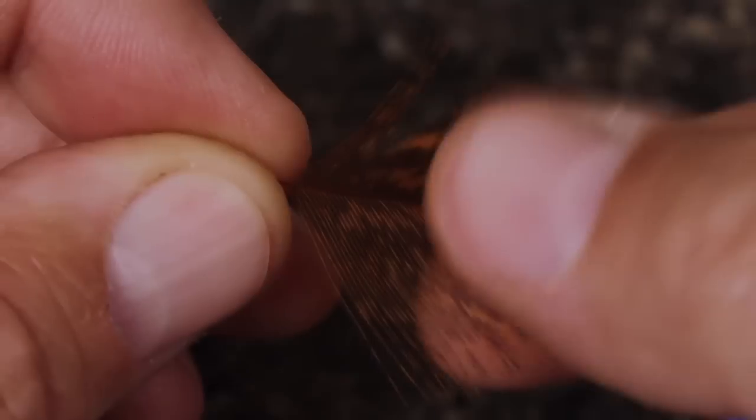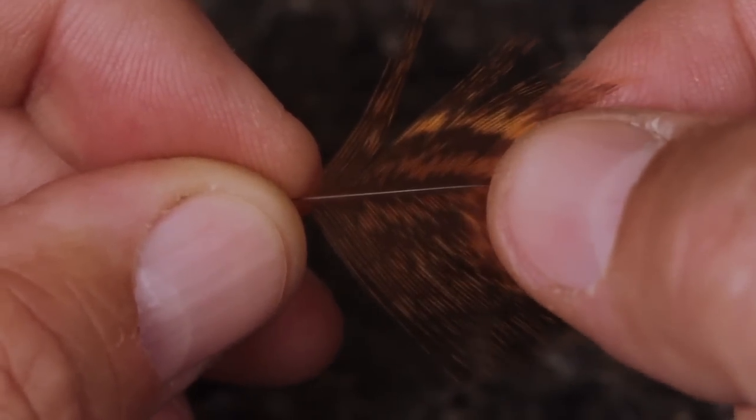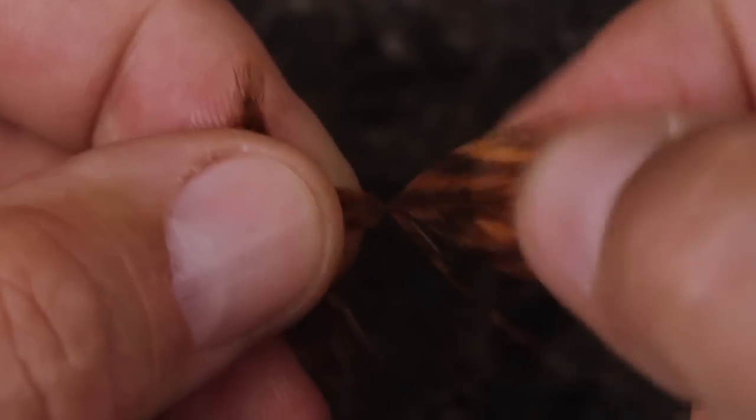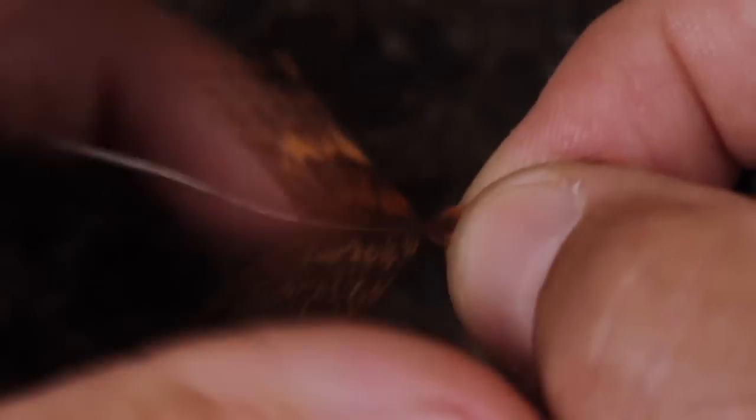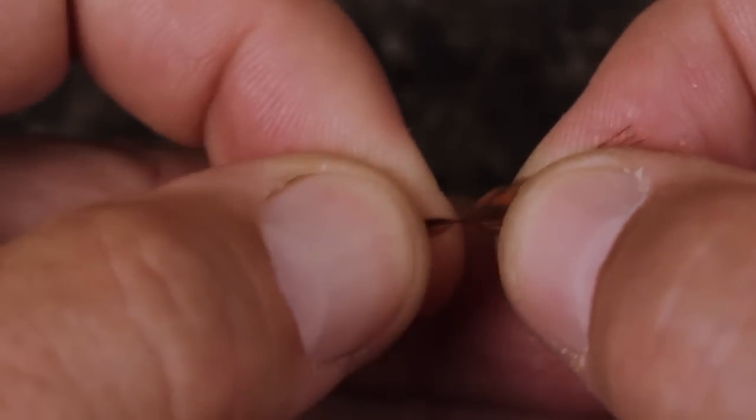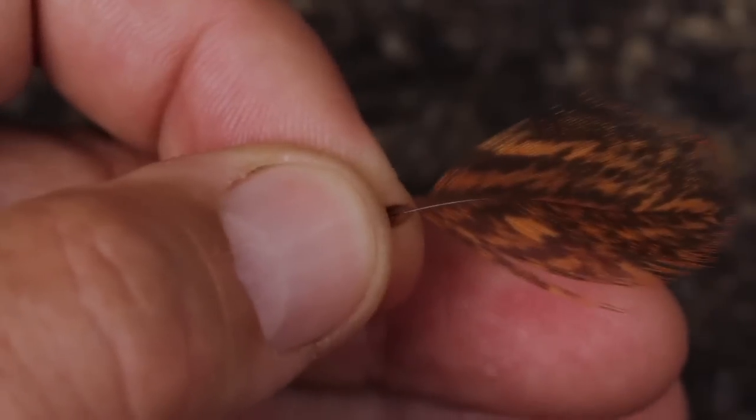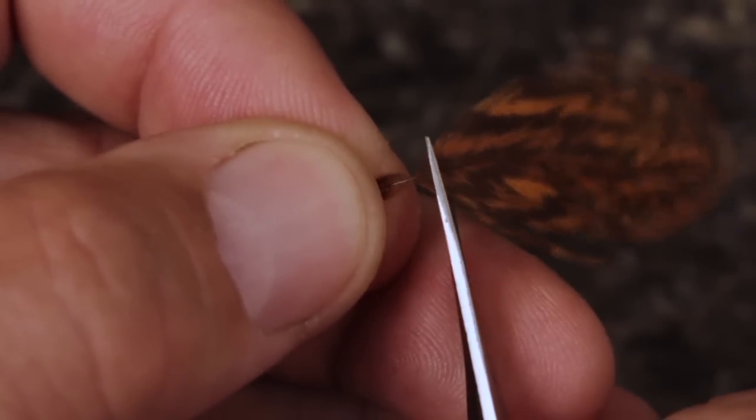Select a single soft tackle feather. Here I'm going to use the burnt orange for contrast. Strip the lower fuzzy fibers away from either side of the stem and then get hold of the feather's tip with the thumb and index finger of your right hand and pull down about a half inch of the fibers toward the base of the stem. We're going to snip the tip off a little differently to leave a small triangle as a tie-in anchor.